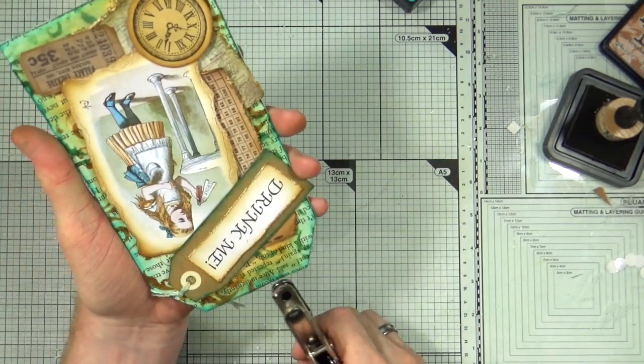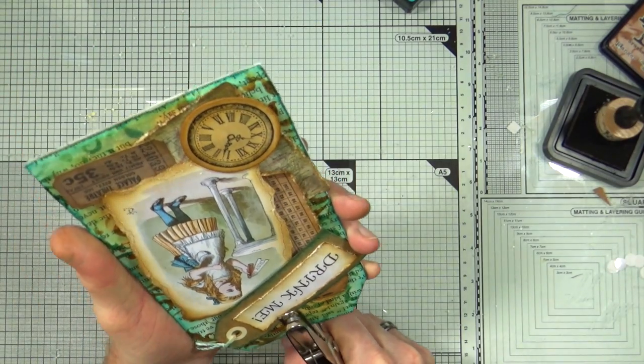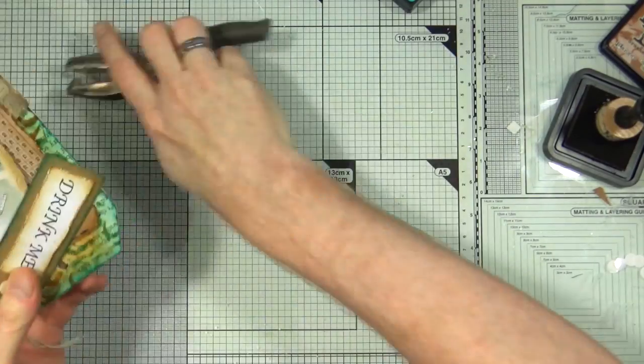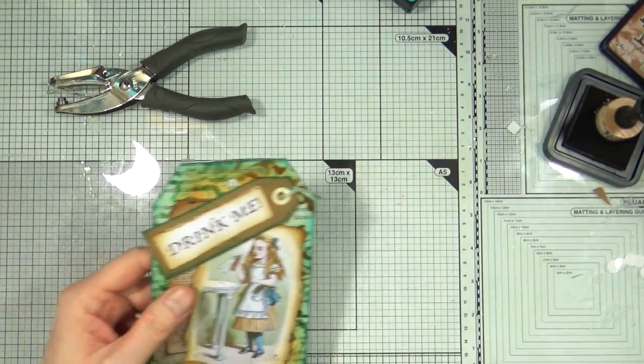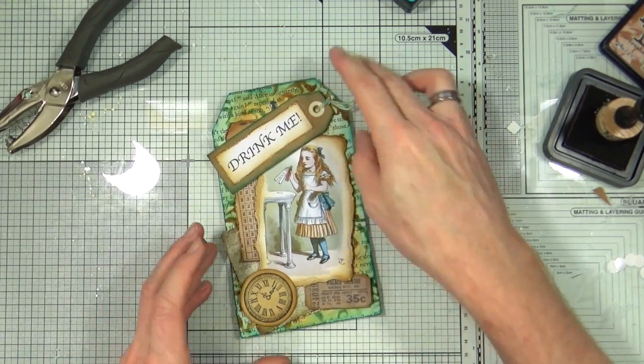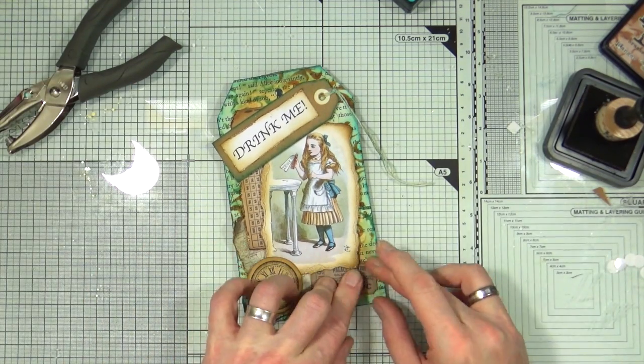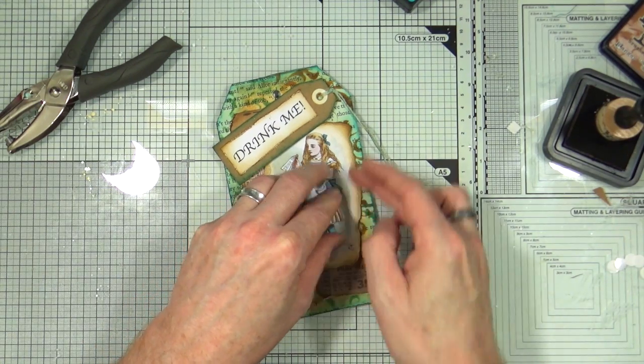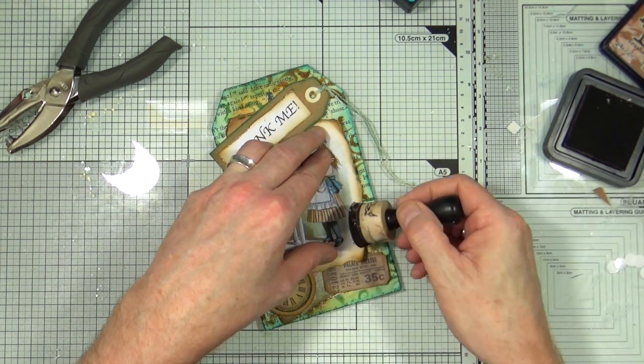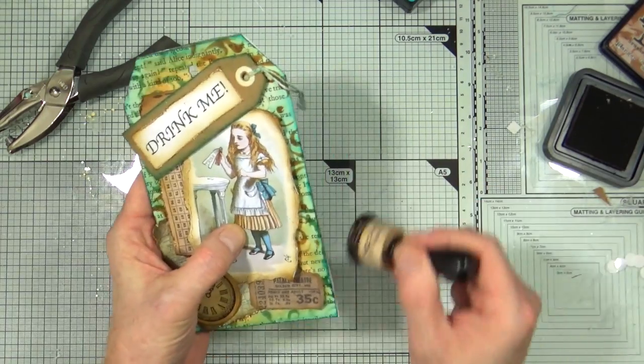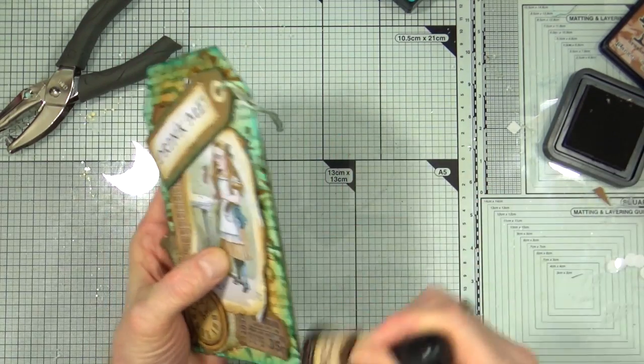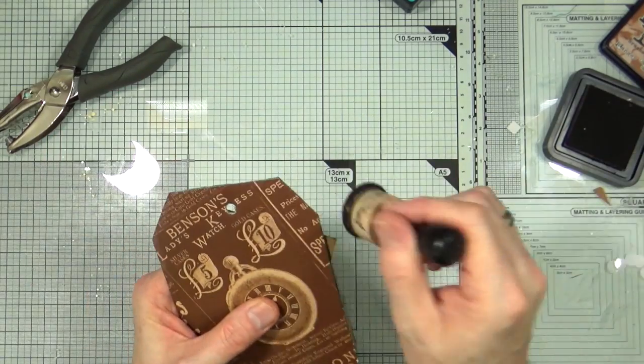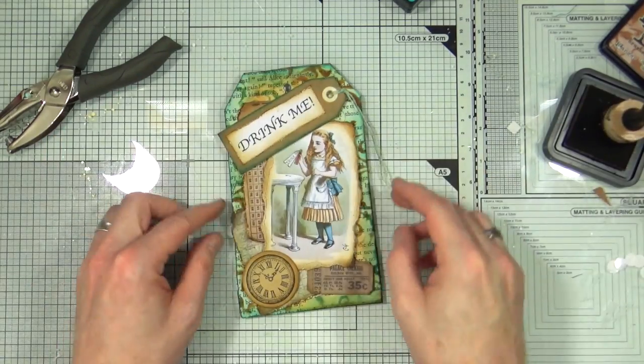Before I forget, I just need to punch the hole for my ribbons to go through at the top of the tag. For that I'm using a quarter inch hand punch from Stampin' Up. I'm also just faffing with the corners now. I also want to add a little bit of that distressing around the edges between the two layers of paper that I've stuck down, just to hide that corrugated cardboard a little.